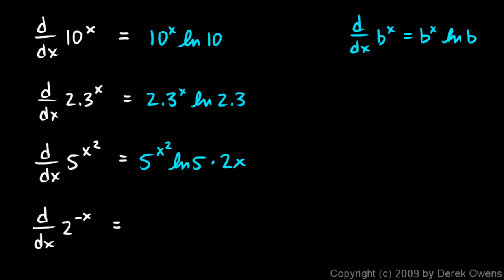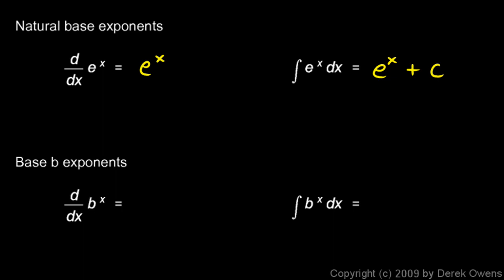This one also requires the chain rule. The derivative of 2^(-x) is 2^(-x) times the natural log of 2, times the derivative of the inner function -x, which is -1. So we rewrite that as negative 2^(-x) times the natural log of 2.